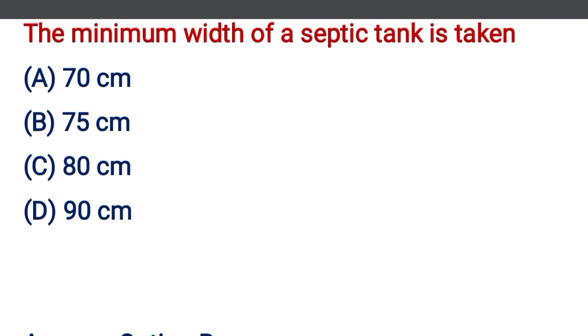The minimum width of septic tank is taken — option A: 70 cm, option B: 75 cm, option C: 80 cm, option D: 90 cm. The correct answer is option B, 75 cm.